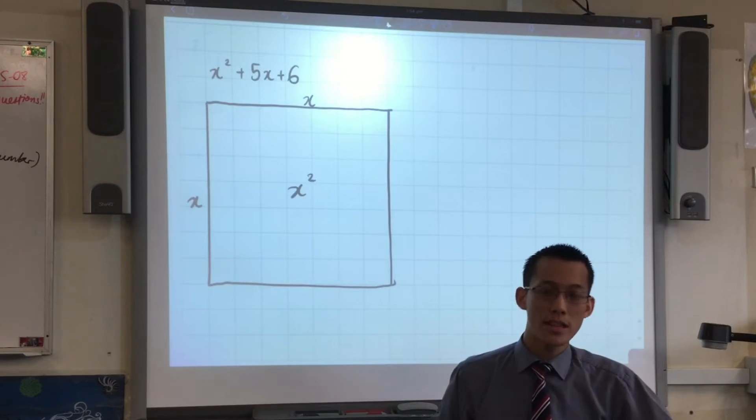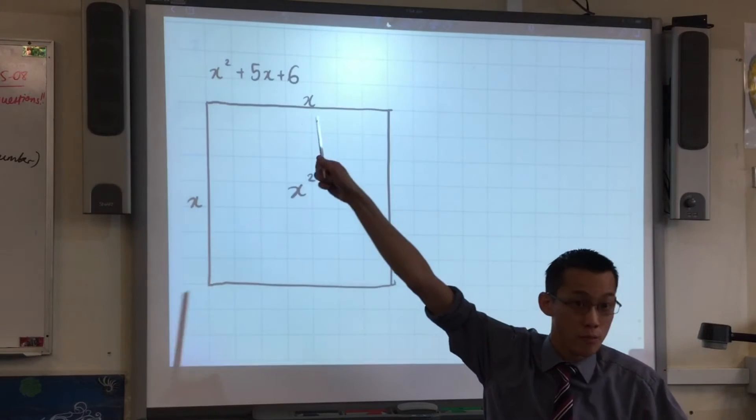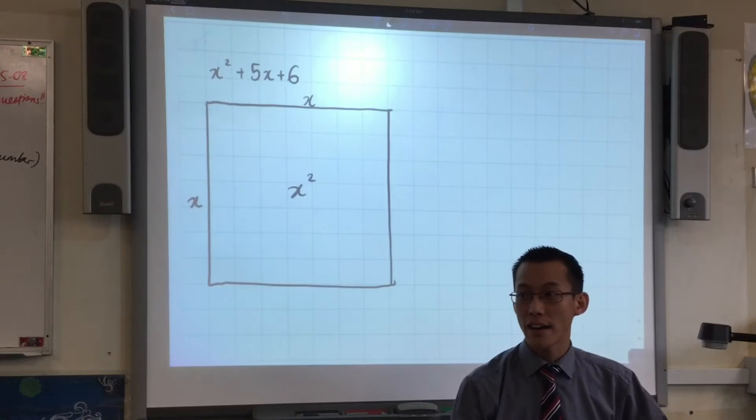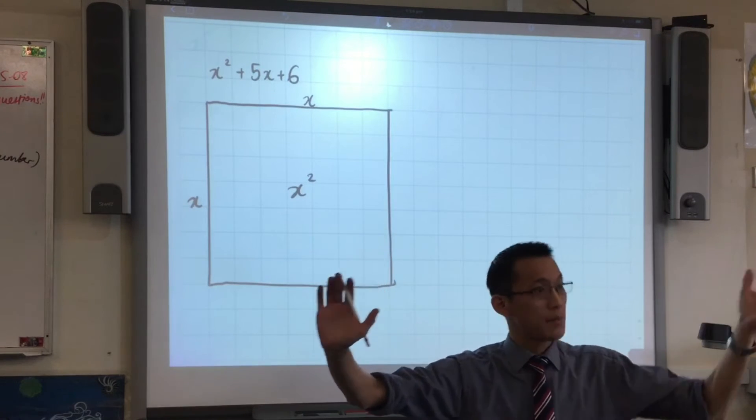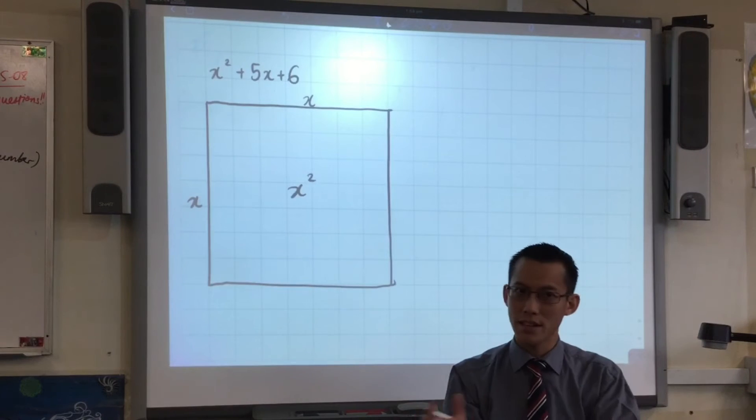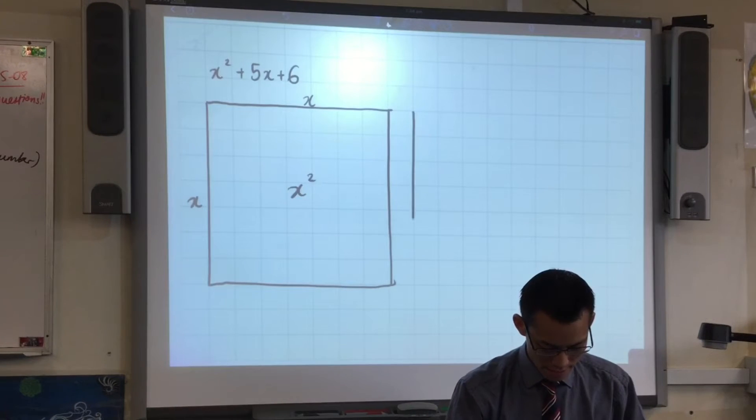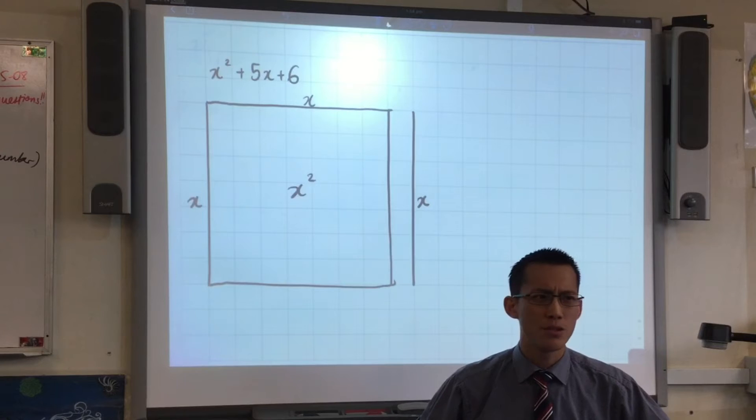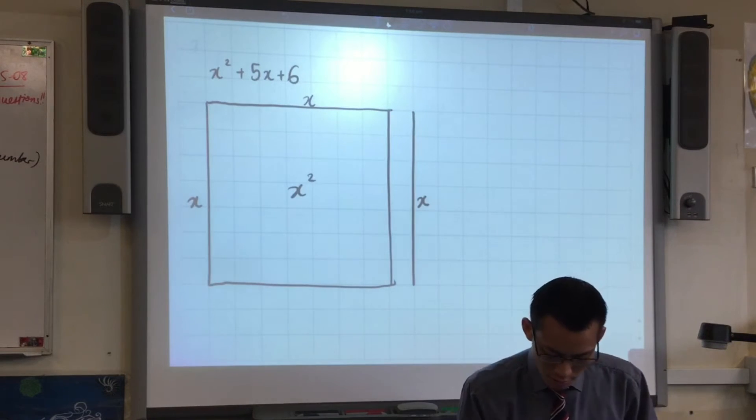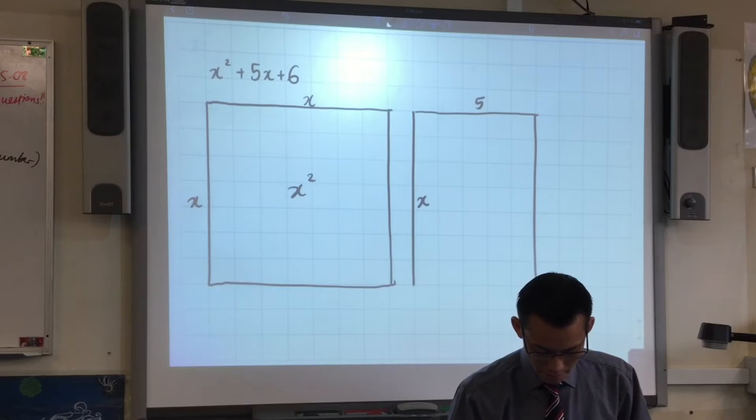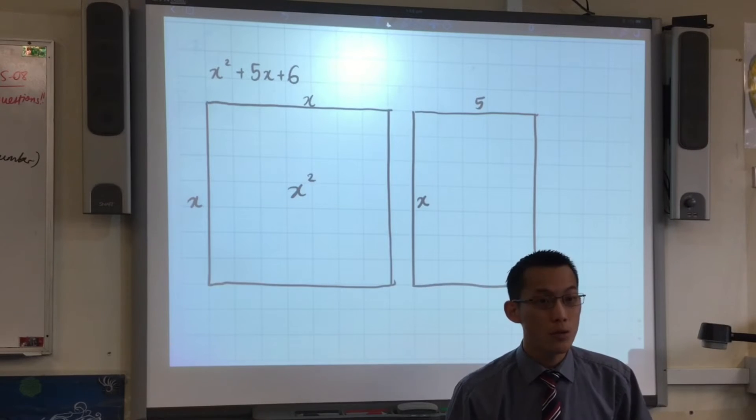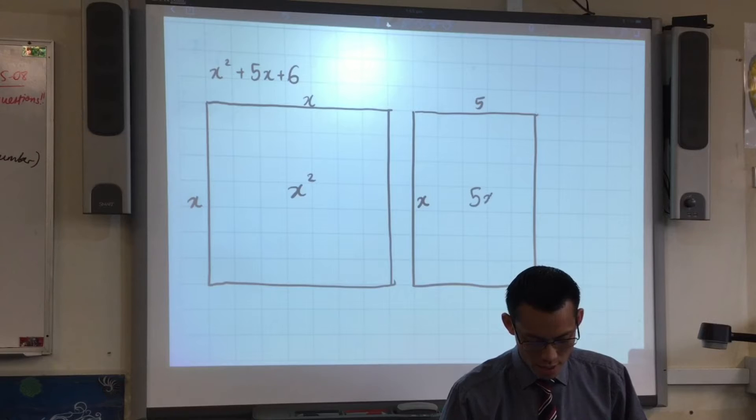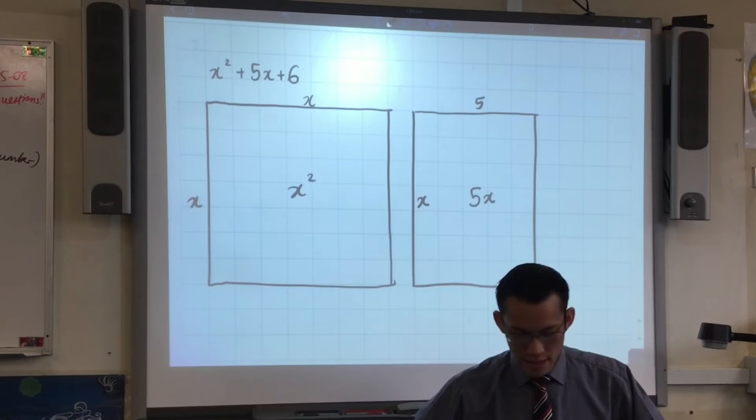Now if that's x², I want to think about how am I going to represent the rest of this expression up there, the rest of this quadratic expression. Well, the next term is 5x. So I have lots of ways I could do this, but I think a common sense way is to draw another line that is x high. What will I attach it to to make a rectangle that's 5x? Yeah, I'll go 5 across. So this rectangle is a representation of 5x. There's x², there's 5x.